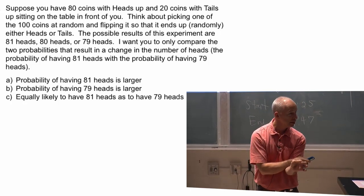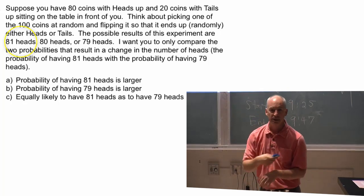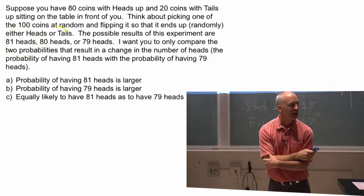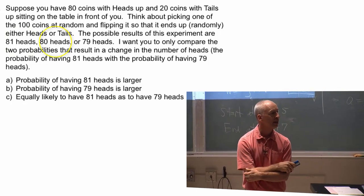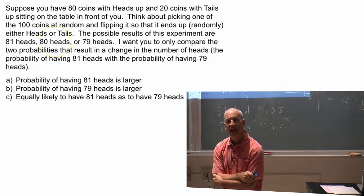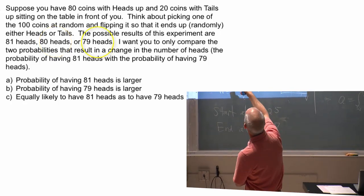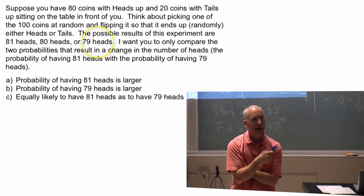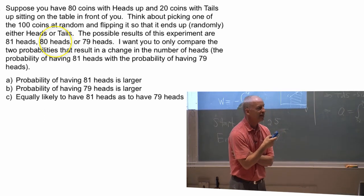Because that one that you flip, whichever one it is, it came up either heads or tails. If it was a tails that you picked and it came up heads, then you have eighty-one heads. If it was a tails that you picked and it came up tails, then you still have eighty heads. If it was a heads that you picked and it came up tails, then you've switched it and so now you only have seventy-nine heads. And if it was a heads that you picked and it came up heads, then again you're back to eighty again.